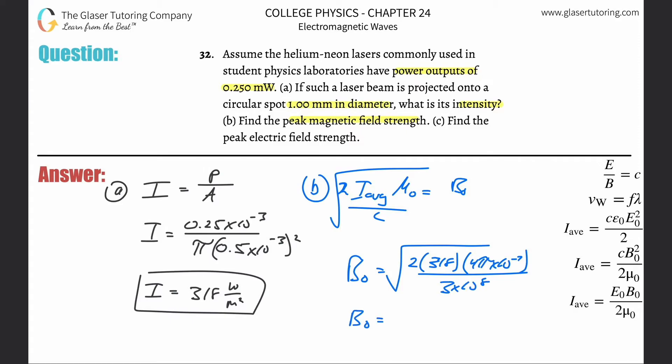So let's see what we get. Square root of two times that answer 318.3, times then four pi times 10 to the minus seventh divided then by three times 10 to the eighth. And we get a value of about 1.63 times 10 to the minus sixth. And that's in terms of Tesla. Those are the units. And that takes care of that. And then letter C.